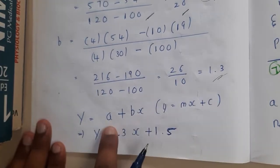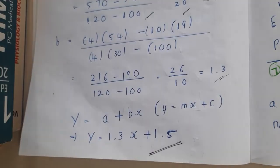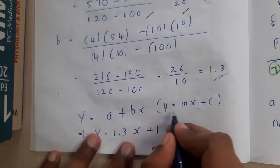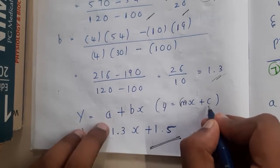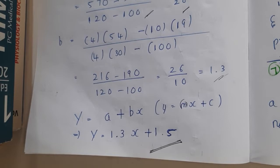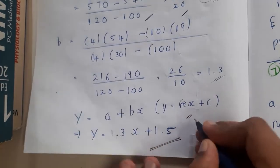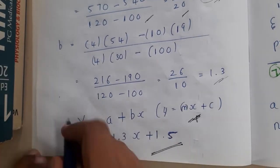At the end you got y equals mx plus c, which is nothing but bx plus a, that is nothing but y equals 1.3x plus 1.5. One of the most important things I am saying - please don't confuse between them. m is b and c is a. If you reverse these things, the answers will be completely wrong. That is the reason why I am stressing it out, because even when I am teaching I might confuse sometimes.